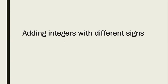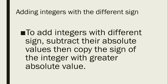Let's now move on to adding integers with different signs. To add integers with different signs, there are two rules. First, subtract their absolute values. Take note: when adding integers with different signs, we subtract their absolute values. Upon getting the difference, we then copy the sign of the integer with the greater absolute value — the number that has a greater value.